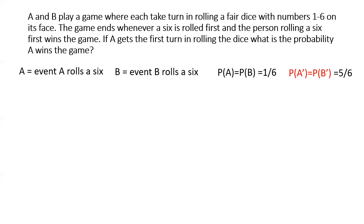Since A gets the first turn, we consider the different scenarios turn by turn in which A gets to win the game. A can win at his very first turn if he rolls a 6, and in that case B doesn't even get to roll. This happens if event A occurs at the very first turn, and the probability of that happening is simply 1/6.